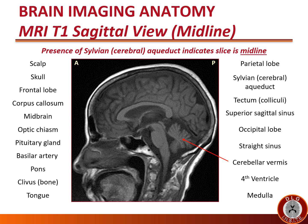The cerebellum lies inferior to the occiput, straight sinus, and tentorium cerebelli, and posterior to the fourth ventricle and pons. The midline cerebellum is called the cerebellar vermis. On T1 images, CSF is black. This triangular-shaped CSF structure anterior to the cerebellum and posterior to the pons is the fourth ventricle. The medulla, or medulla oblongata, is the caudalmost aspect of the brainstem, lying just superior to the spinal cord.